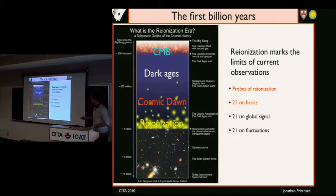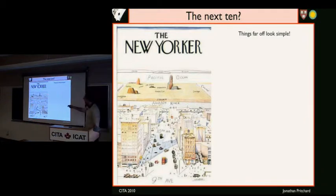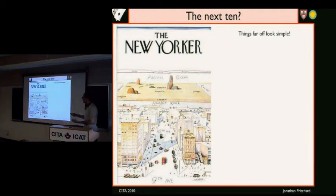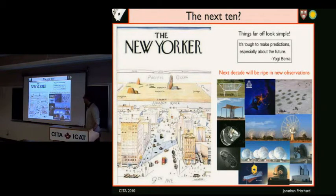It's very customary in talks on reionization to show this cartoon picture. I like it because it always reminds me of a New Yorker cartoon — very detailed down here and very simple up here. Anyone that's been to California knows there's a lot going on out there. To me this is cause for hope, because things far away look simple only because we don't know very much. As we learn more, our very basic questions become more sophisticated. So there's a lot to learn, and the next 10 years are going to be very exciting for this field.